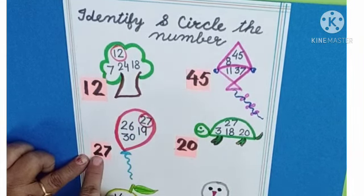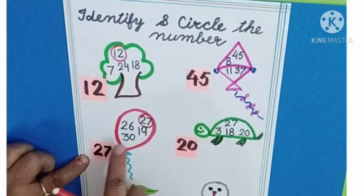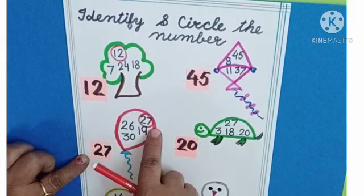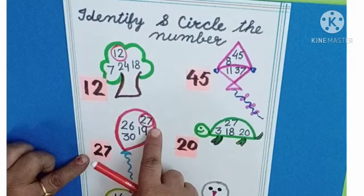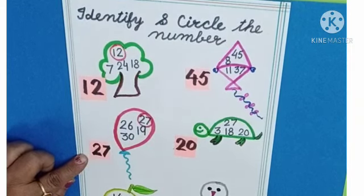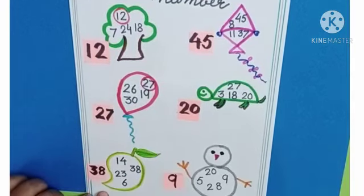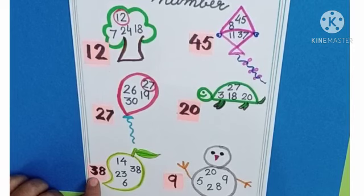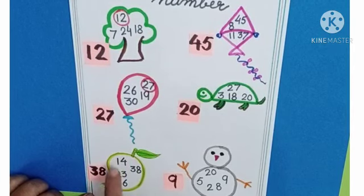Now this is 27, and this is also 27. Our next number is 38.